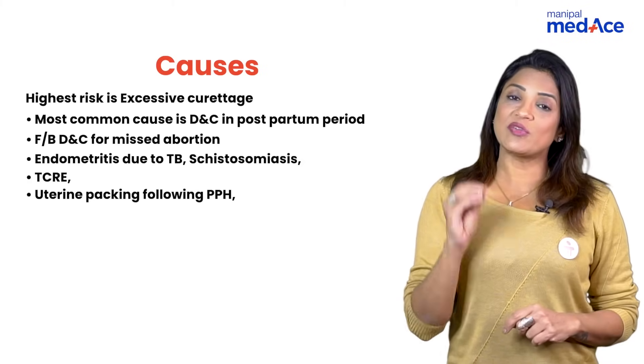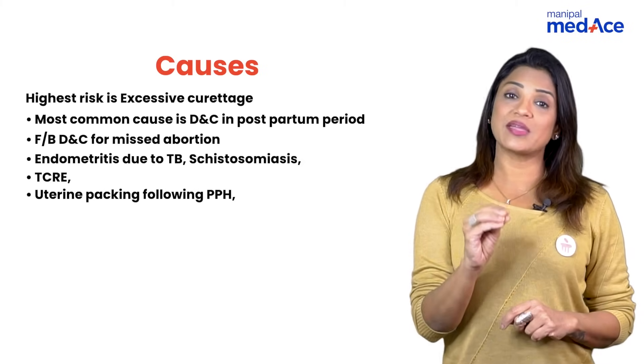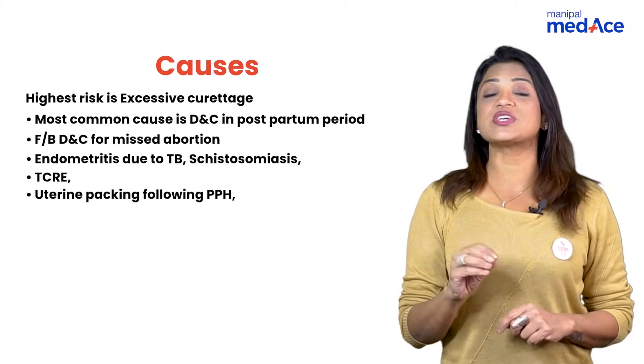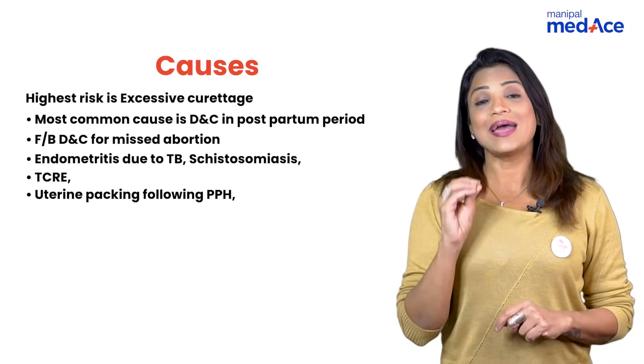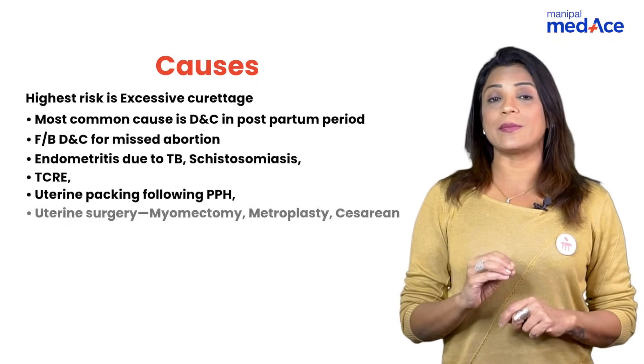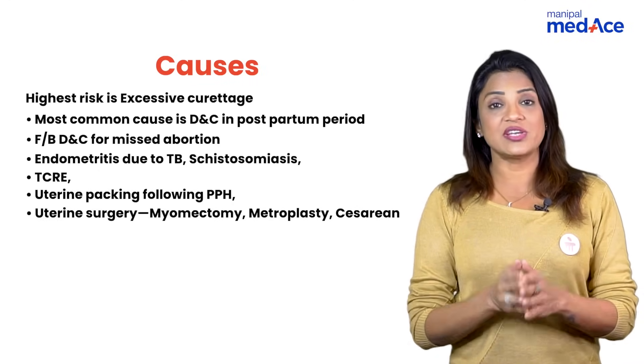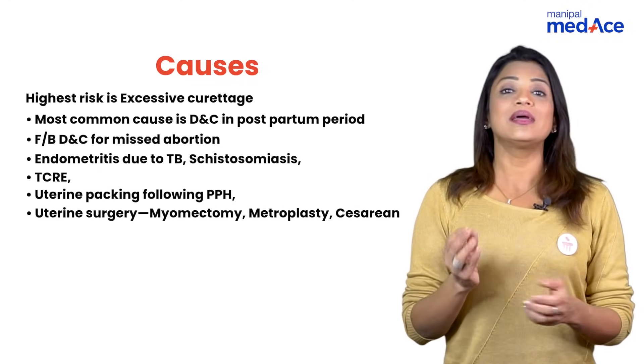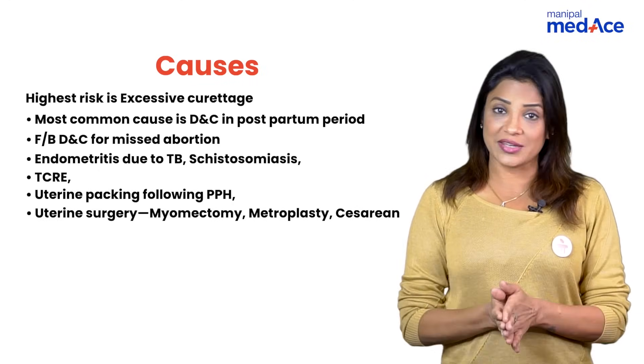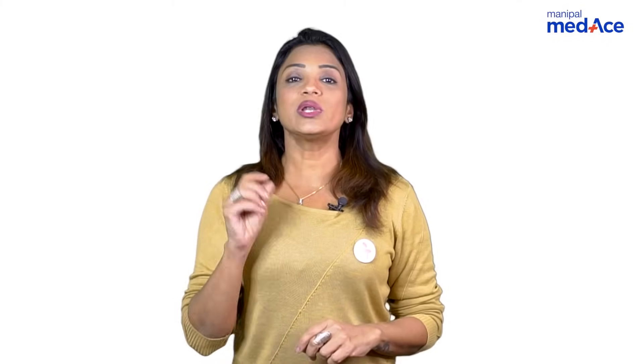Fifth cause is when we do uterine packing to prevent PPH after delivery. And the sixth cause can be any kind of myometrial surgery like myomectomy, caesarean section, and any other surgery.